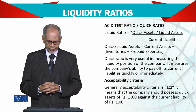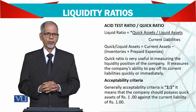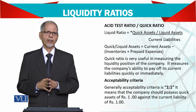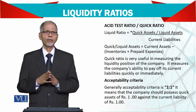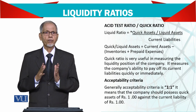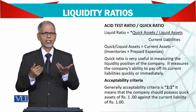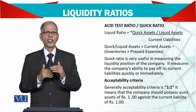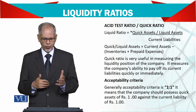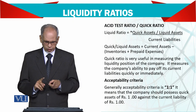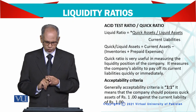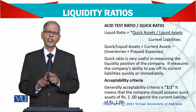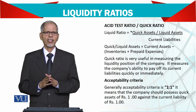The acceptable criteria for quick ratio is generally 1:1. You should at least have quick assets equal to your liabilities to pay them off, because it is very important that the company's working capital has no problem. If for some reason you cannot pay salaries even for one month, that is a serious problem. You must have enough cash to pay off your immediate liabilities. The minimum is 1:1 — it means the company should possess quick assets of one rupee against current liabilities of one rupee. If it is more than that, it is better, but this minimum must be maintained.